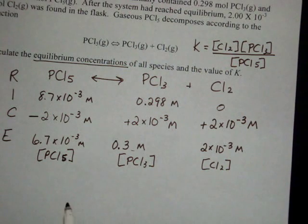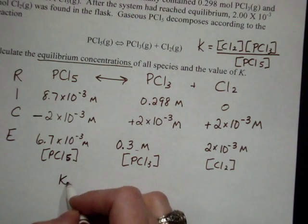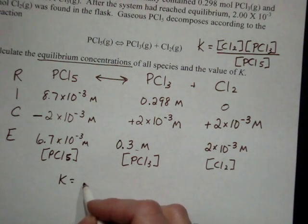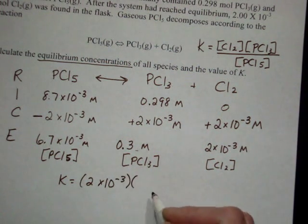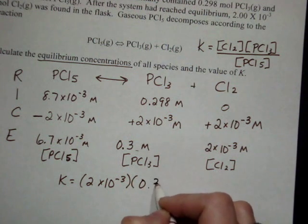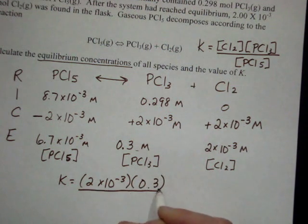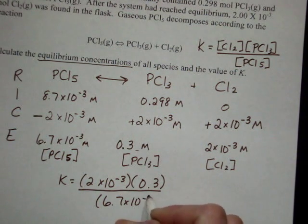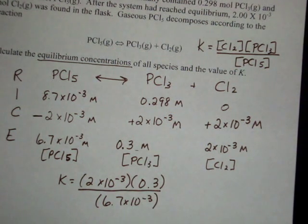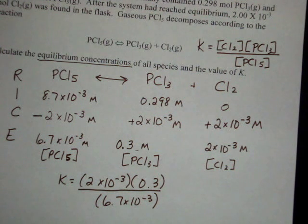At this point, I use my K expression to plug in the values. Cl2 was 2 times 10 to the negative 3. PCl3 was 0.3. PCl5, 6.7 times 10 to the negative 3. Then I just use the calculator to solve.